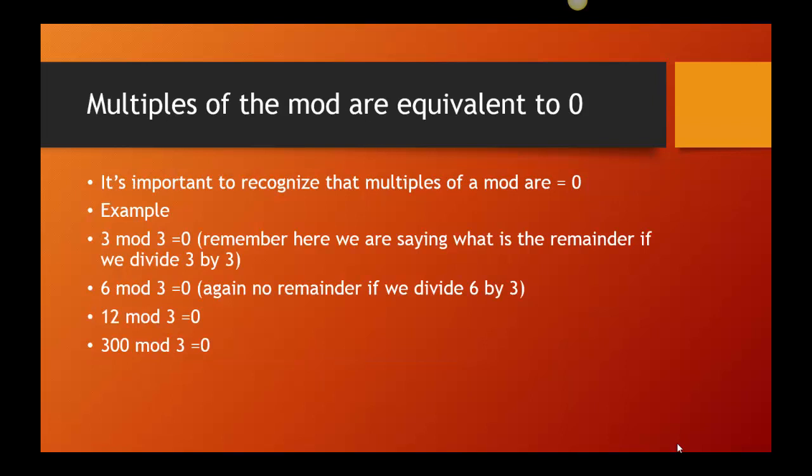It's important to recognize that multiples of a mod are 0. So for example, 3 mod 3 is 0. Remember, when we're looking at mods, we're trying to find the remainder if we divide by the mod. So in this case, 3 mod 3, we're saying if we divide 3 by 3, what's left over? Nothing.